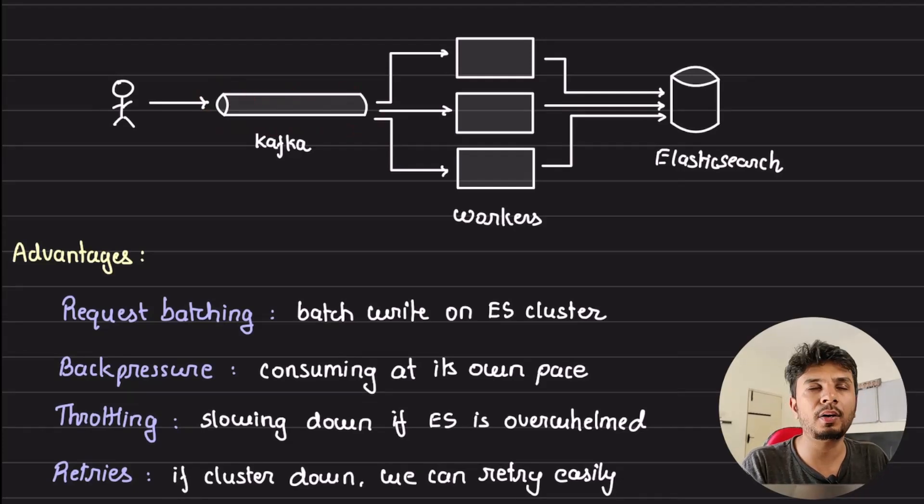A few advantages over here: first is request batching. You can very clearly see how we have one topic for each Elasticsearch cluster. When you put in a bulk of indexing requests, you can take a few at a time and make bulk calls to Elasticsearch, reducing the load on Elasticsearch. Second, back pressure. Given that if Elasticsearch is slowing due to any reason, the workers can slow things down very easily because Elasticsearch is not responding. They can just wait for some time before they start to re-ingest the data.